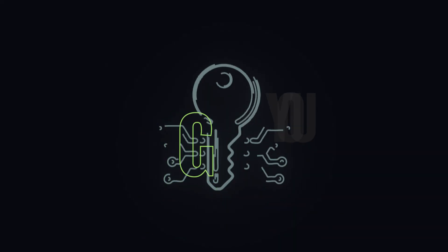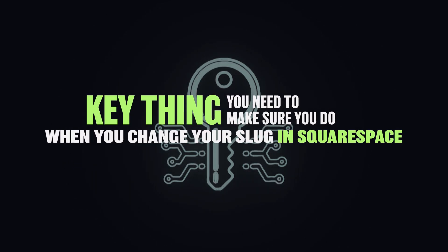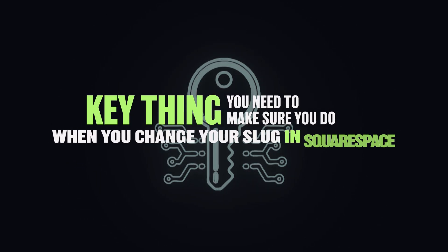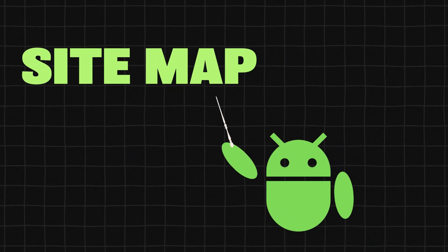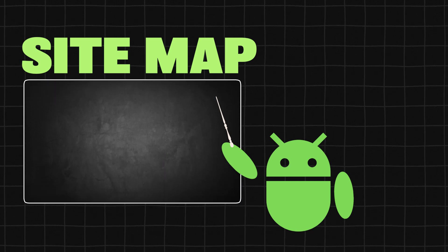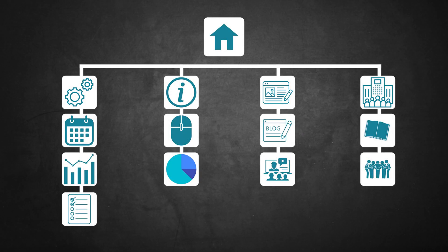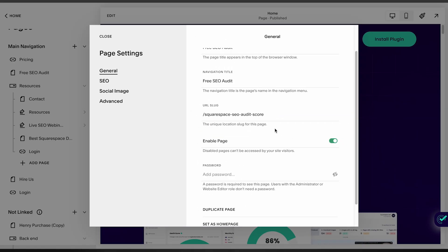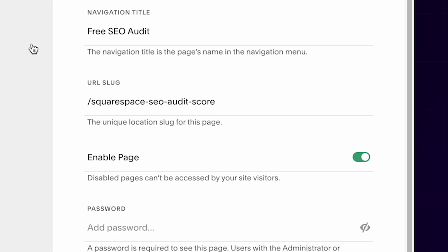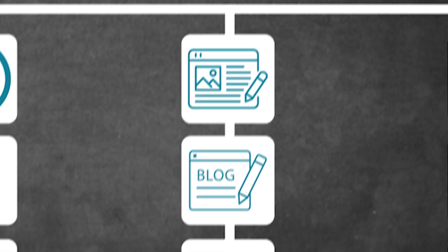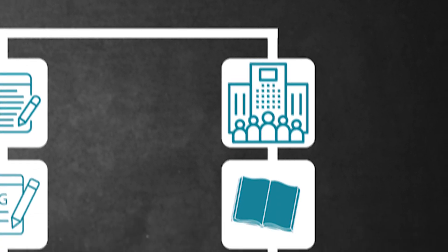Now, moving on to the real key thing you need to make sure you do when you change your URL slug on Squarespace, and this comes down to SEO. Google goes through your website via something called your sitemap, which is essentially a map of all the pages on your website so Google can understand what pages it should display on search engines. When you change the URL slug, Google is still going to see that old URL that you changed your page from.